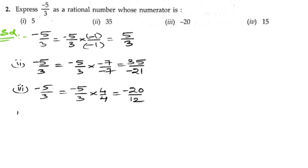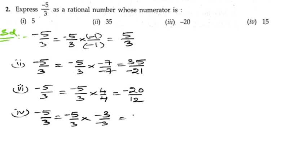The fourth part: to make the numerator positive fifteen from minus five by three, we multiply by minus three by minus three. Minus times minus is plus, five threes are fifteen. For the denominator, three threes are nine, so the answer is fifteen by minus nine.